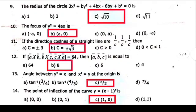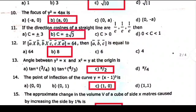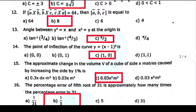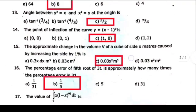Eleventh, option B, C is equal to plus or minus root 3. Twelfth, option B, 8. Thirteenth, option C, 5 by 2. Fourteenth, option C, one by zero. Sorry, one comma zero.